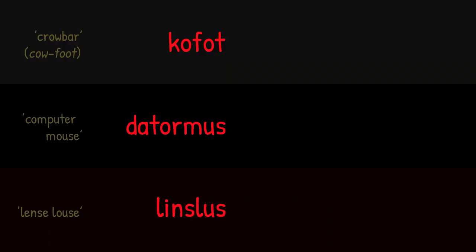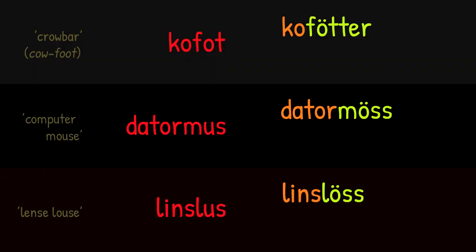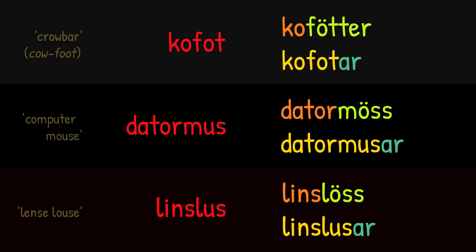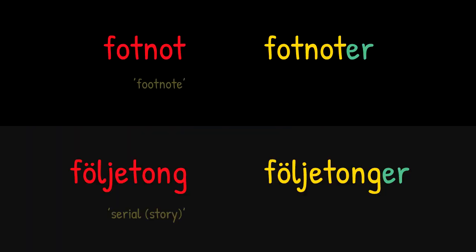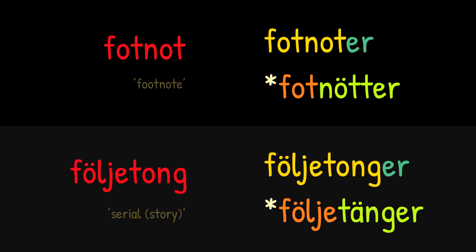A few other words show the same tendency but aren't quite there yet; in these cases the umlauted form is generally preferred, but depending on who you ask a regular ar-plural might be fine as well or even better. The main such words are kofot, datormus and linslus, in decreasing order of acceptance for the alternative form in the written standard language. Interestingly, words can also go in the opposite direction — fotnot and följetång are often incorrectly pluralized as fotnötter and följetängar, often jokingly, but the forms are common enough to make some people unsure about what the correct form is.